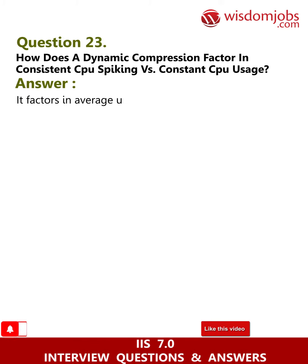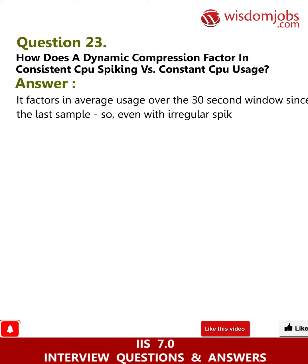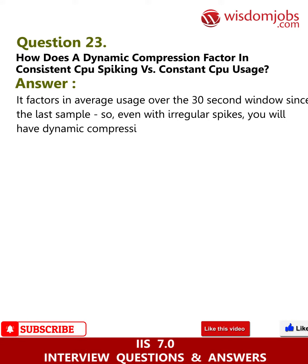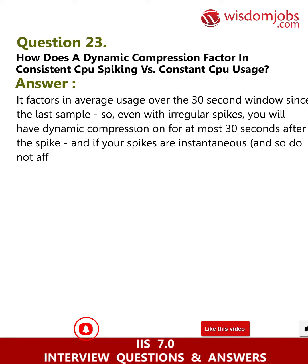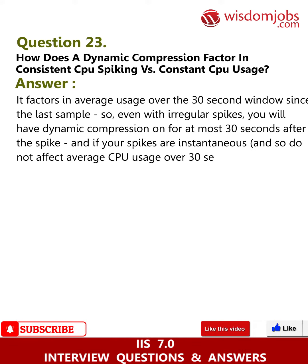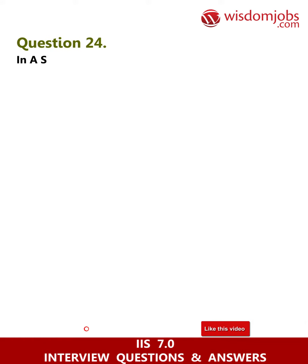Question 23: How does dynamic compression factor in consistent CPU spiking versus constant CPU usage? Answer: It factors in average usage over a 30-second window since the last sample. So even with irregular spikes, you will have dynamic compression on for at most 30 seconds after the spike. If your spikes are instantaneous and do not significantly affect average CPU usage over 30 seconds, they will not affect dynamic compression.